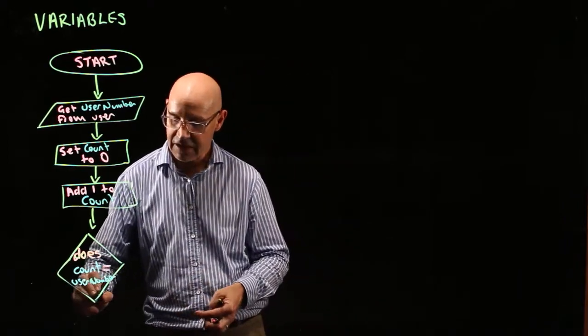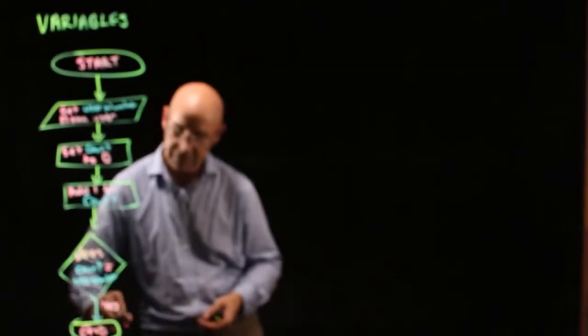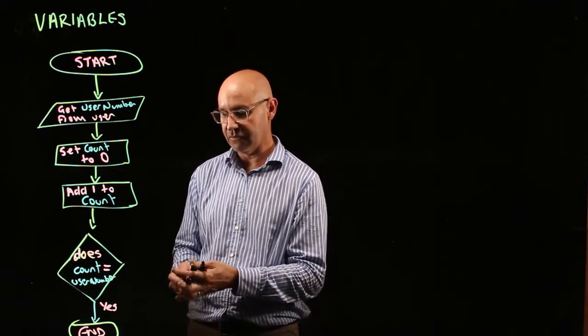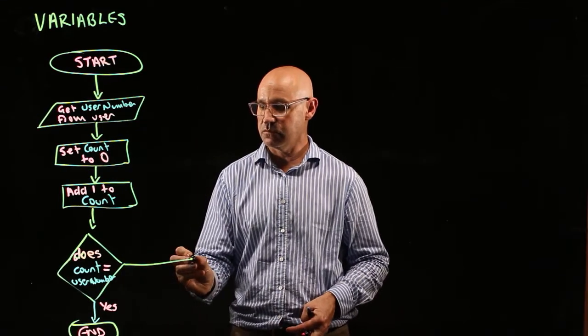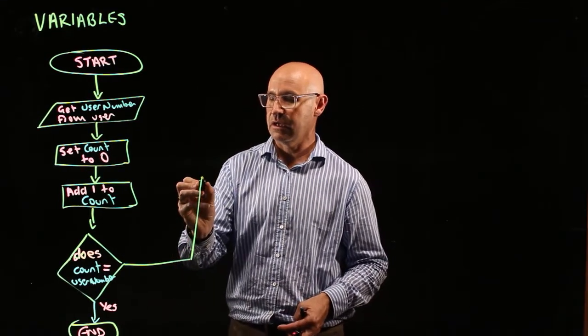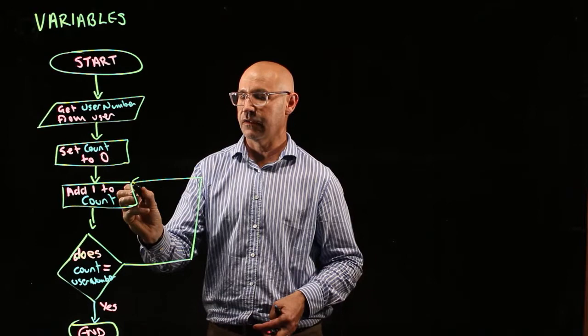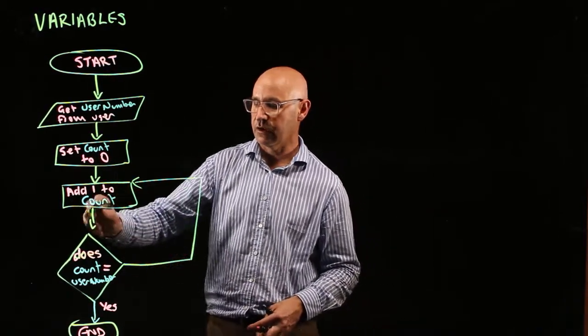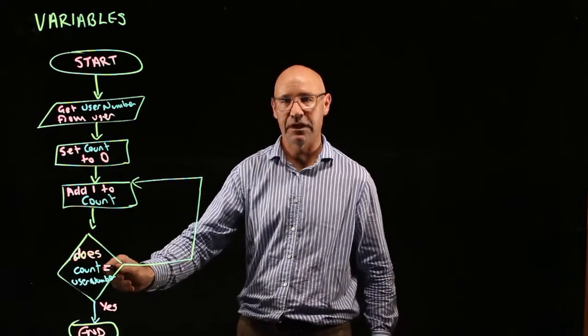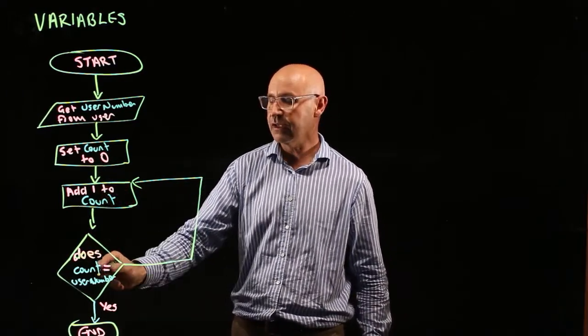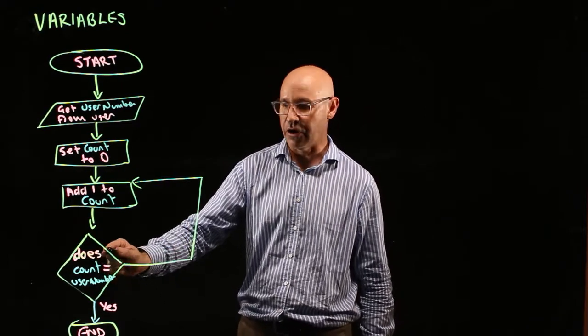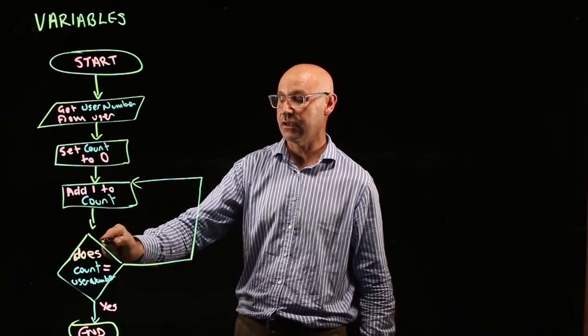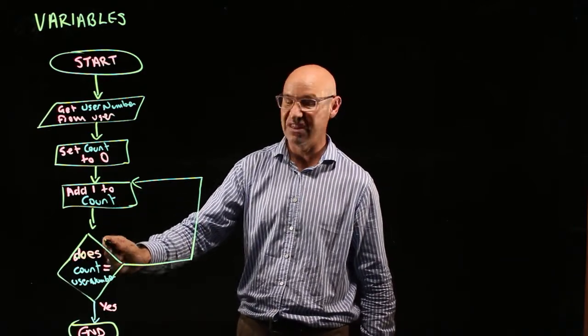If the answer is yes. But what happens if it doesn't? So if the answer is no, what do we need to do? We need to add one to the count. And it's going to continue to loop like this. So does the count equal the user number? No. Well, add one to the count. Does the count equal the user number? No. Add one to the count. Continue like this until such time as the count does equal the user number. Then we finish.